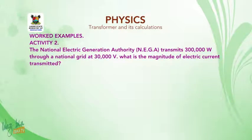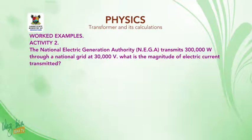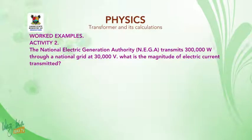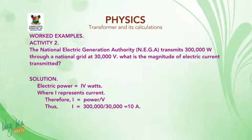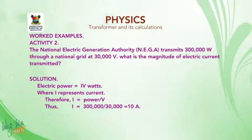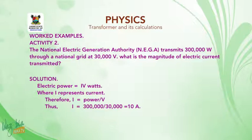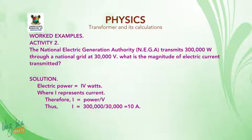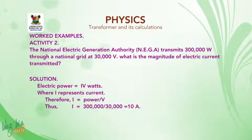Activity 2. The National Electric Generation Authority transmits 300,000 watts through a national grid at 30,000 volts. What is the magnitude of electric current transmitted? Solution: Electric power equals IV watts, where I represents current. Therefore, I equals power over voltage: I equals 300,000 over 30,000, which gives us 10 amperes.